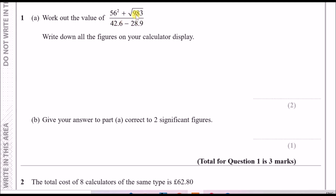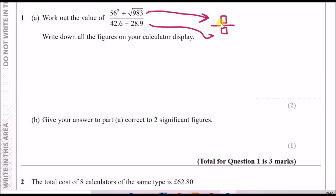Number one asks us to work out the value of this sum and write down all the figures on your calculator display. If you're using a Casio, always start with the fraction button, copy the top part into the numerator and the bottom into the denominator, then press enter. You should get a result of 231.19...